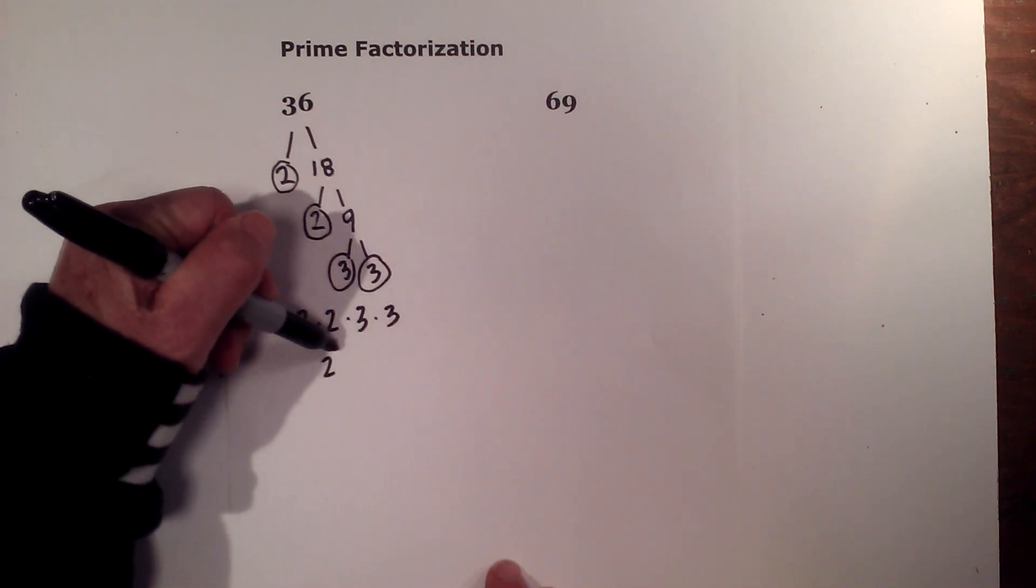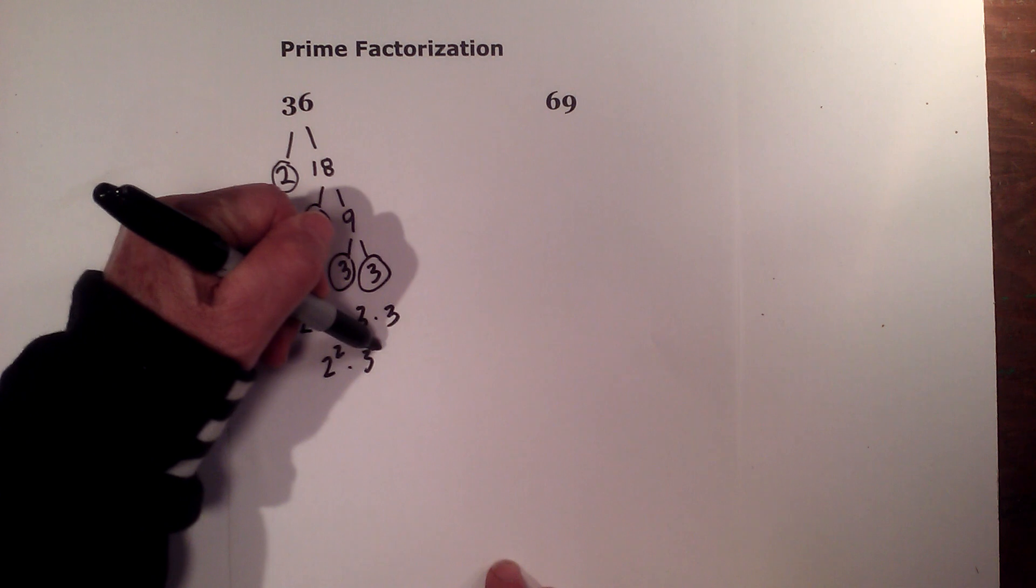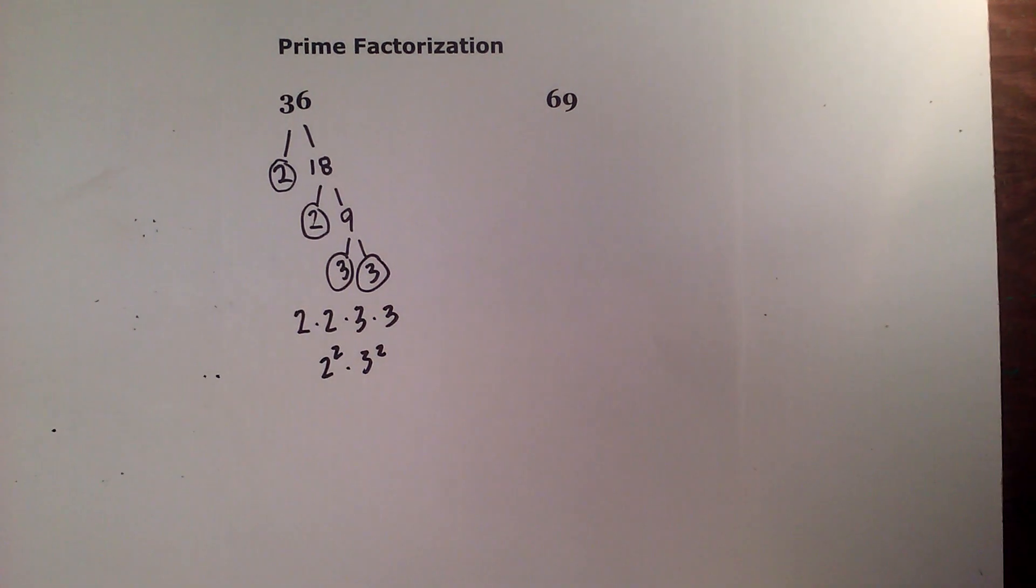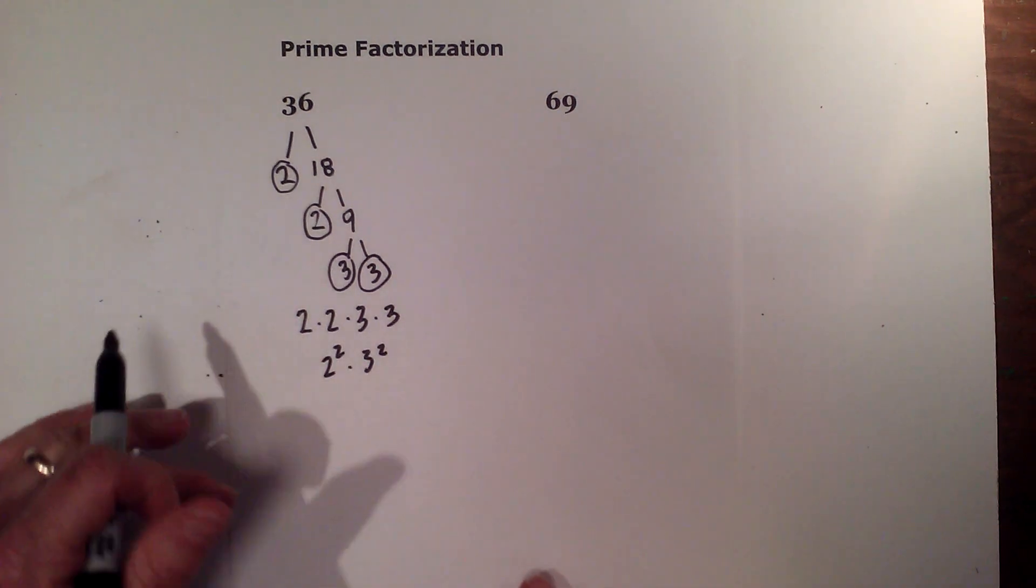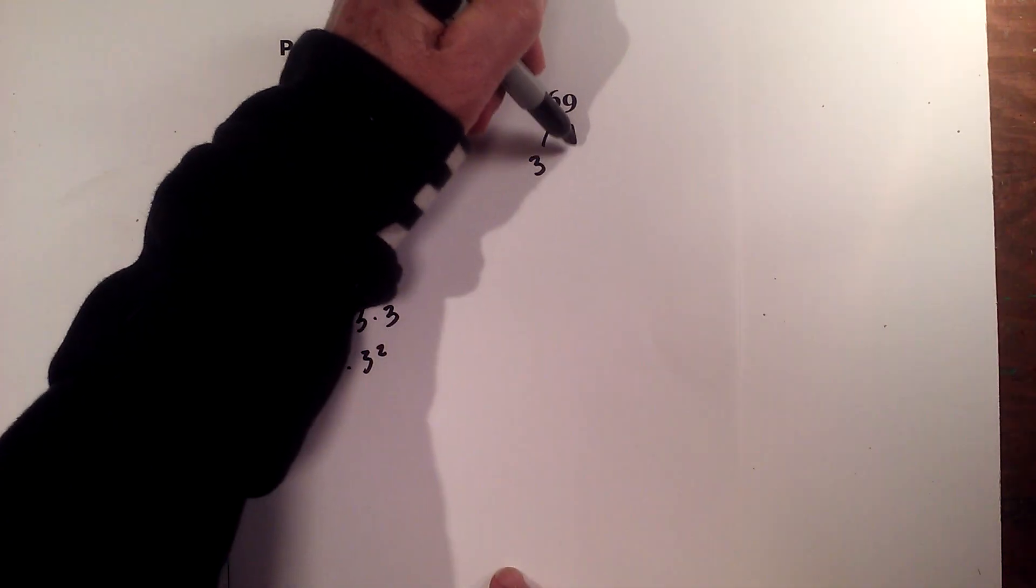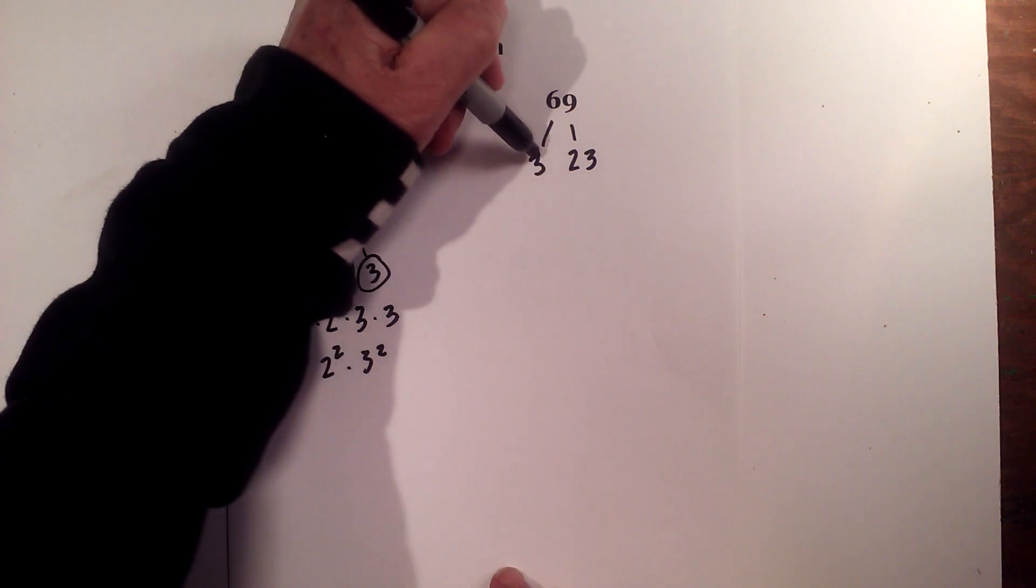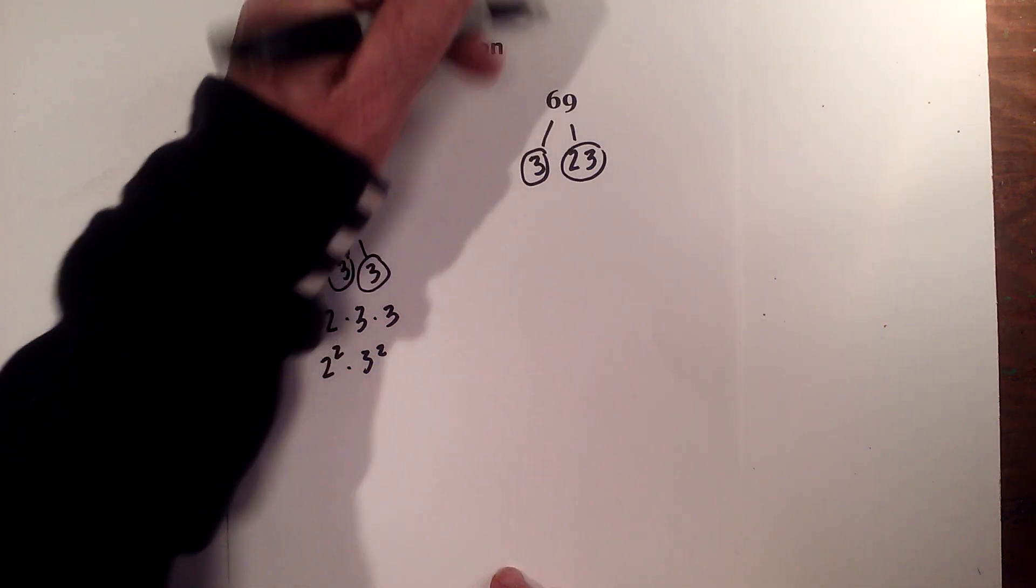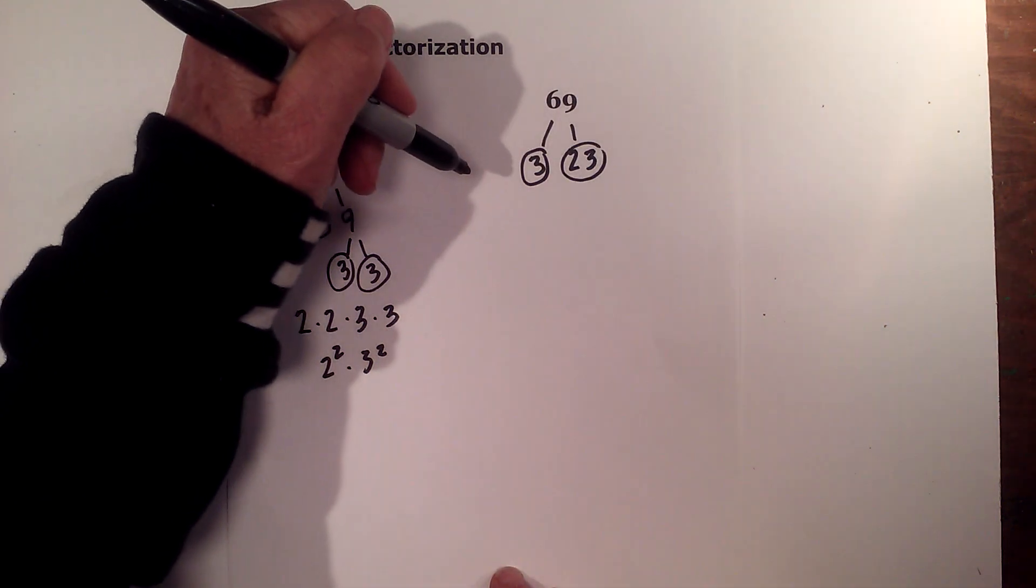Or you could write it 2 squared times 3 squared. Next let's look at the prime factorization of 69. This will not take long. We have 3 times 23. Circle both of these because they are prime.